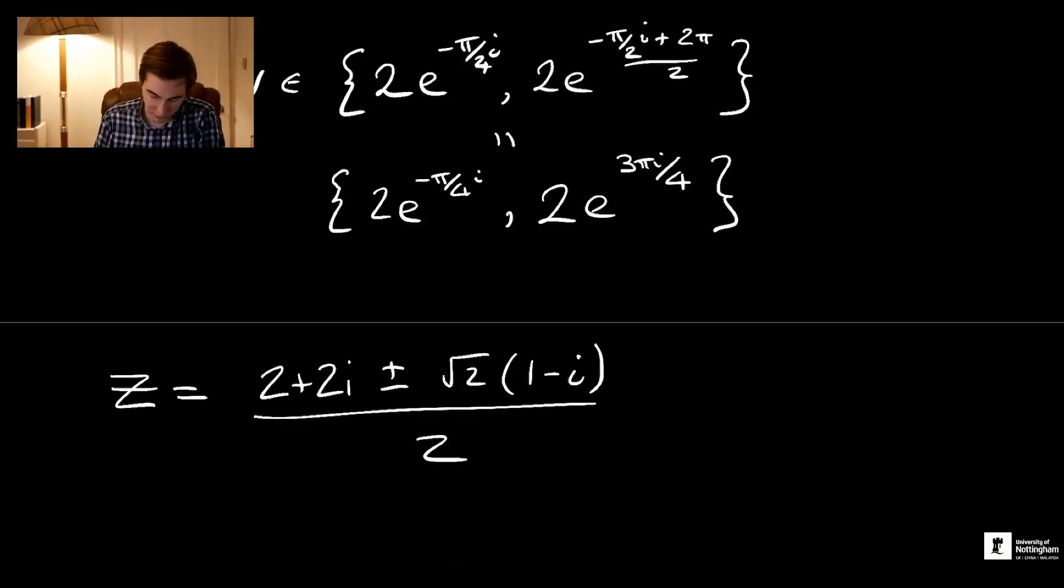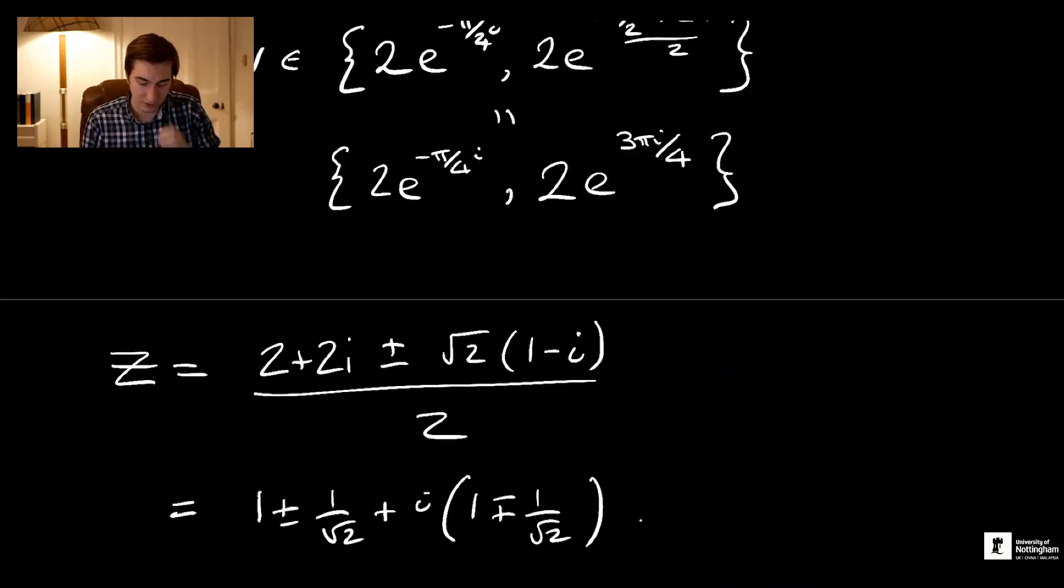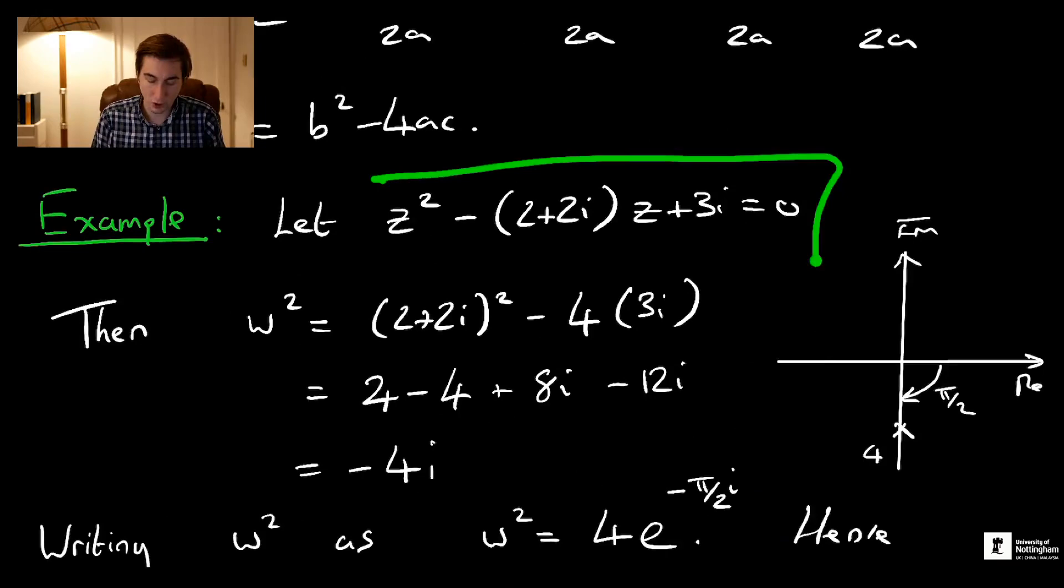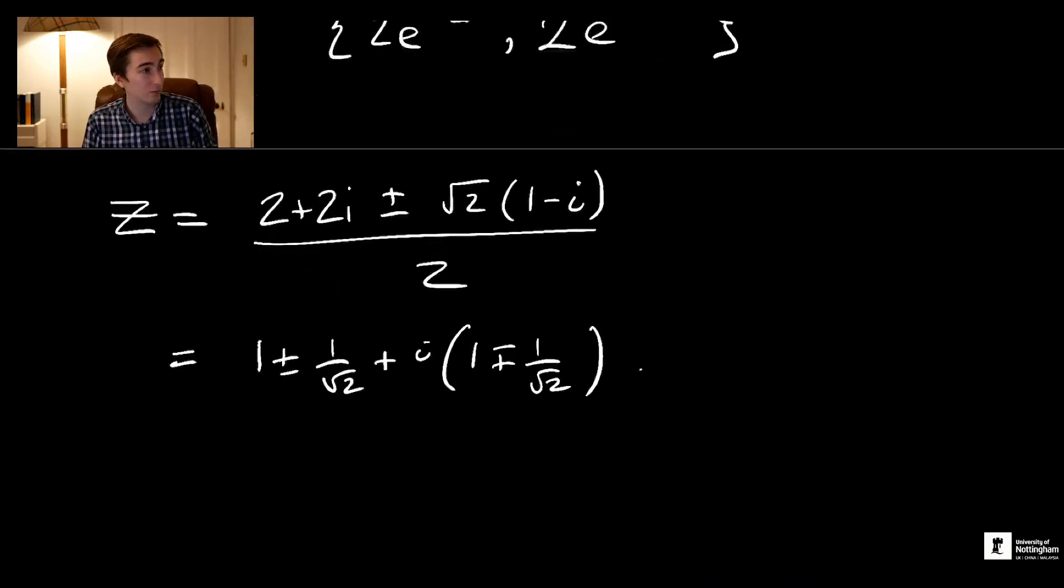Then doing some simple simplifications, we can write that as 1 ± 1/√2 + i(1 ∓ 1/√2). So this is exactly our set of solutions to this polynomial equation. All we did is use the nth roots formula and the quadratic formula that you know rather well from school.